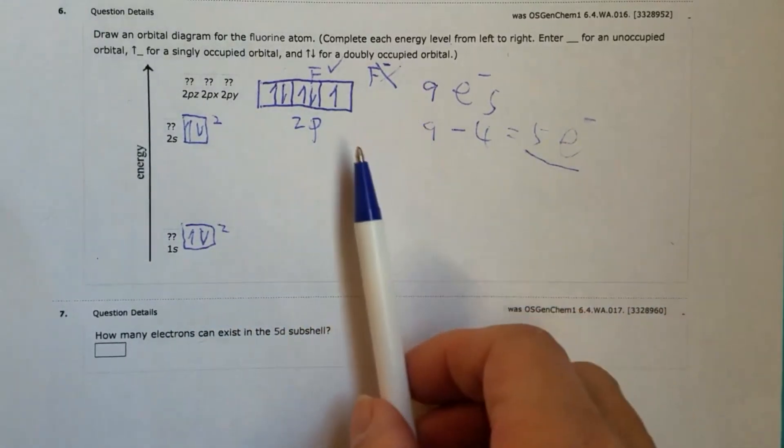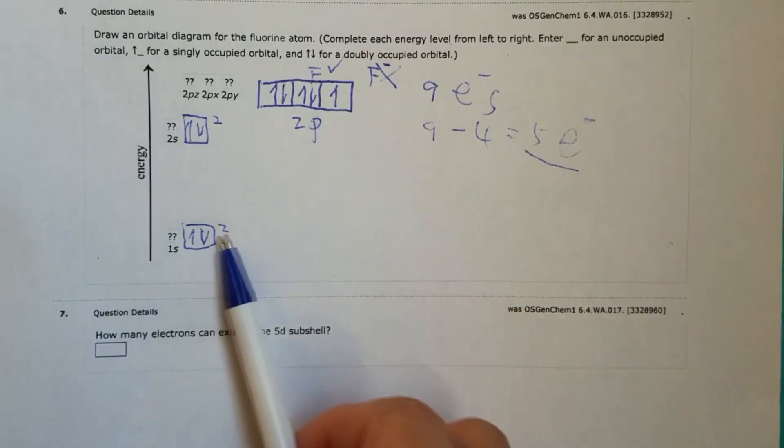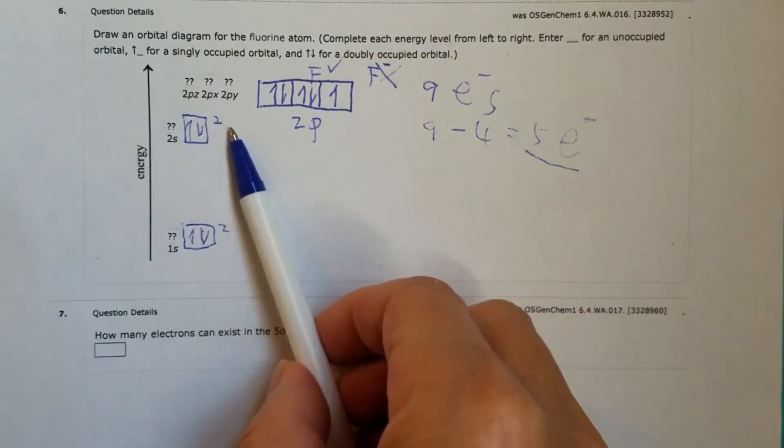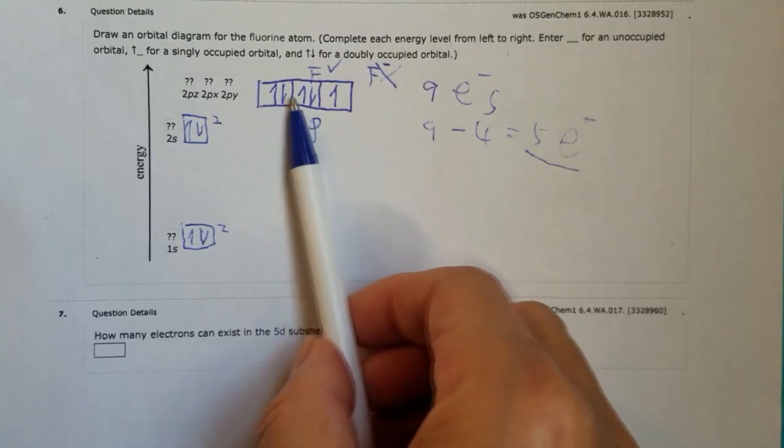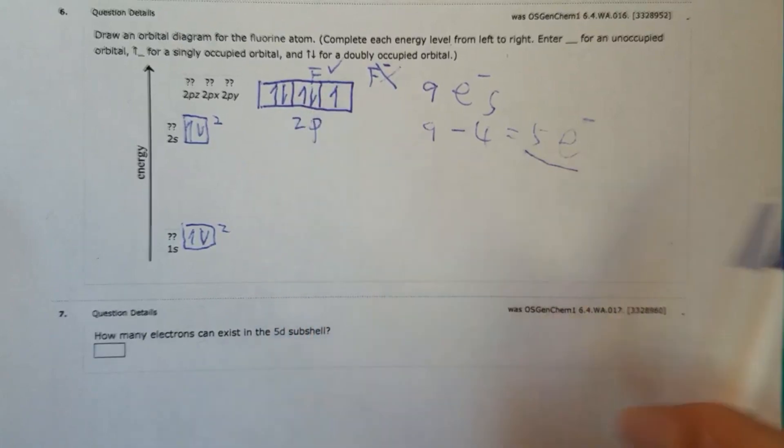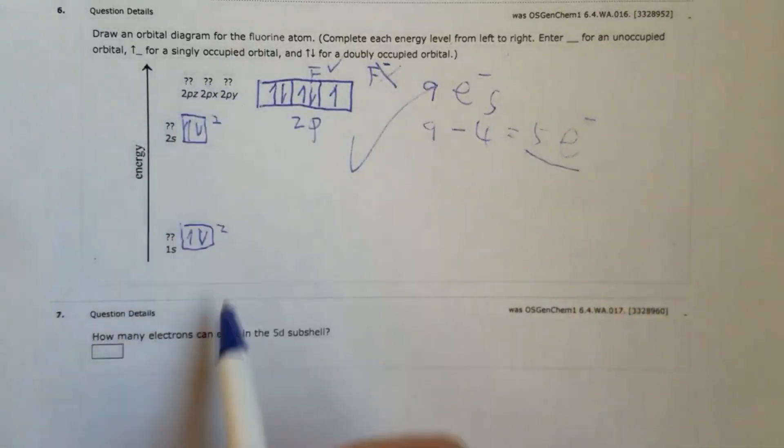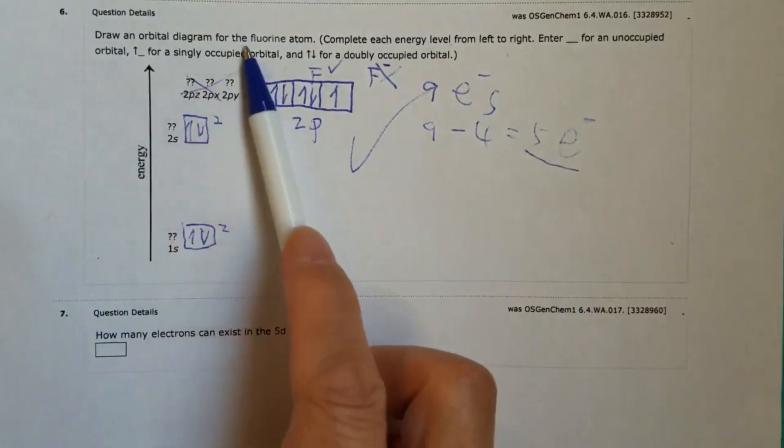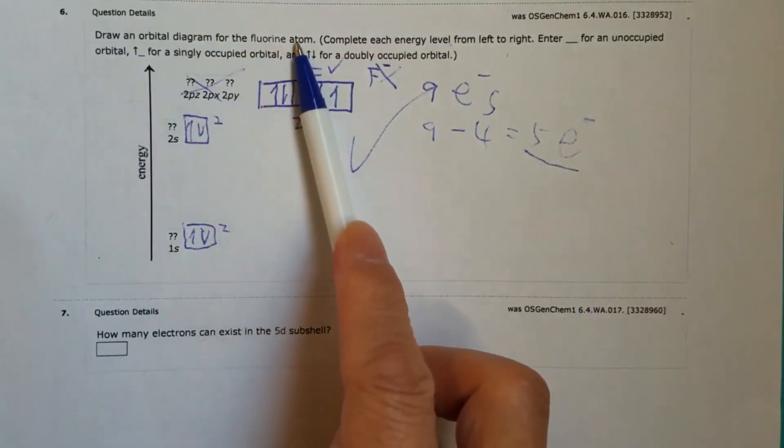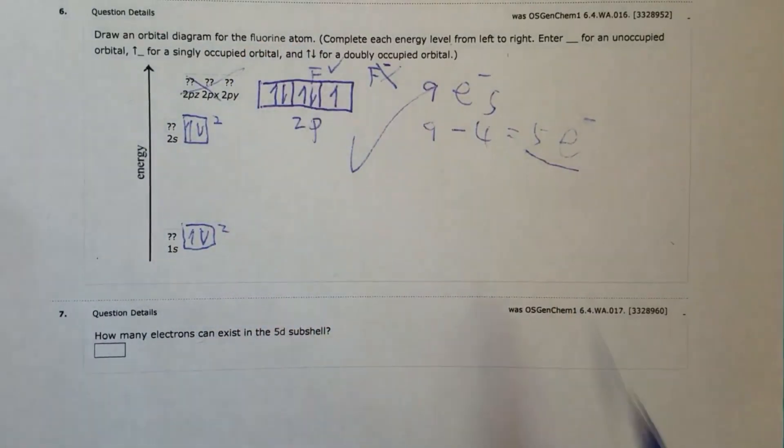So now double check the number of electrons. Two plus two, four, five, six, seven, eight, nine. Bingo, we are done. So this is the orbital diagram of fluorine atom. Okay, not fluoride.